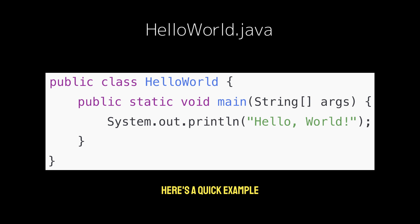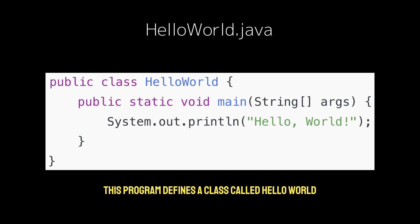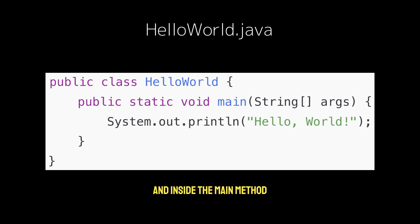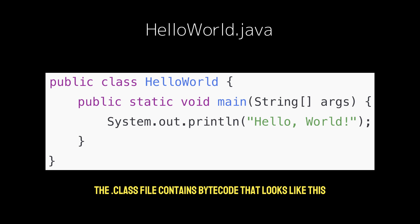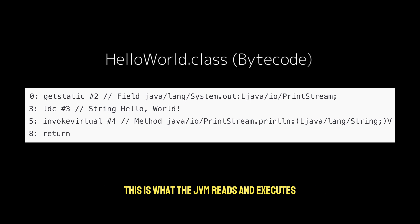Here's a quick example. Let's say we write this simple Java program. This program defines a class called HelloWorld with a main method, which is the entry point for any Java app. Inside the main method, it calls System.out.println, a built-in function that prints the string "HelloWorld" to the console. When compiled, the .class file contains bytecode that looks like this. This is what the JVM reads and executes.